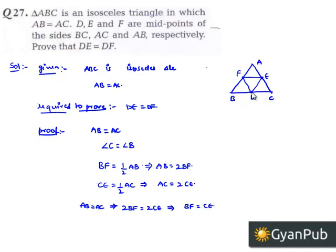D is the midpoint of BC, so BD equals DC.